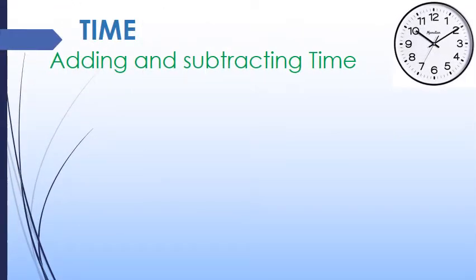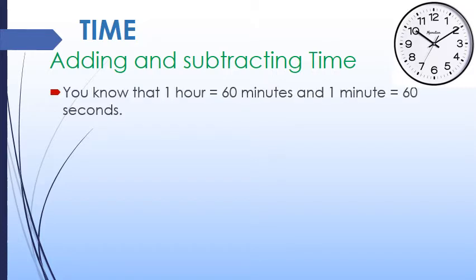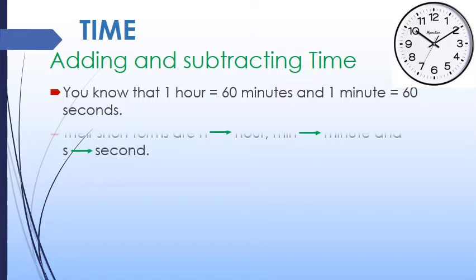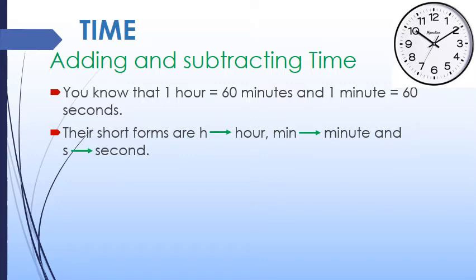In this exercise, we will learn about adding and subtracting time. You know that 1 hour is equal to 60 minutes and 1 minute is equal to 60 seconds. Their short forms are: h for hour, min for minute, and s for second.